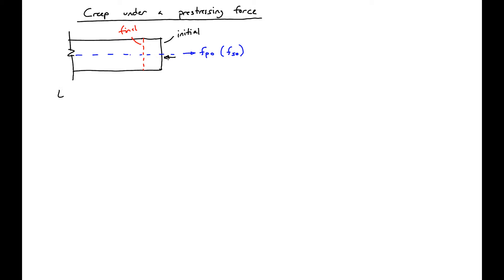We'll start with our equilibrium conditions. In equilibrium we have no applied load, so P0 equals PC plus PS, which equals AC·FC plus AS·FS. This is equal to zero because we have no external applied load.